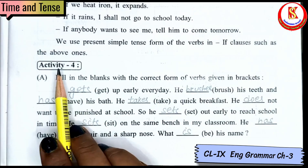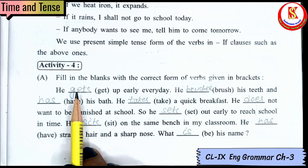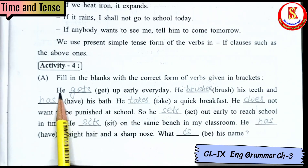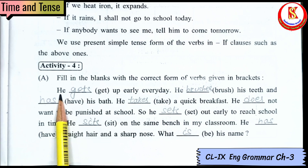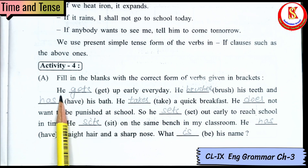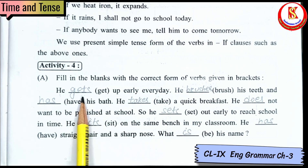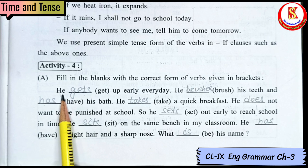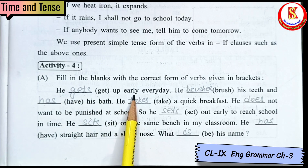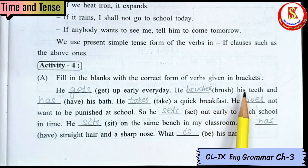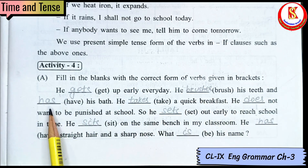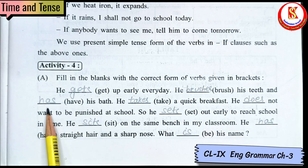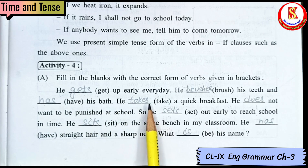Here comes Activity 4. We have to use present simple and the subject is 'he'. When the subject is he, she, or it, we add 's' or 'es' to the verb. So: he gets up early every day. He brushes his teeth and has his bath.